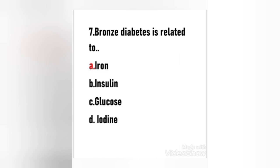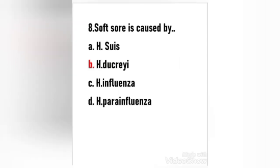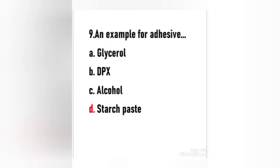Next question: Soft sore or chancroid is caused by — (a) Haemophilus, (b) Haemophilus ducreyi, (c) Haemophilus influenzae, (d) Haemophilus parainfluenzae. The right answer is option B — Haemophilus ducreyi. Chancroid or soft sore is a sexually transmitted infection caused by the bacteria Haemophilus ducreyi. Having chancroid also increases the risk of developing other sexually transmitted diseases because the sores compromise the skin barrier and immune system.